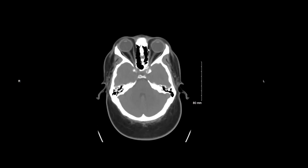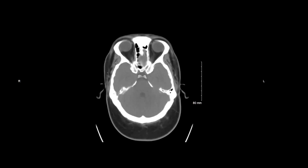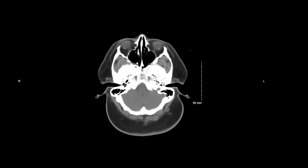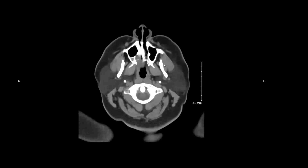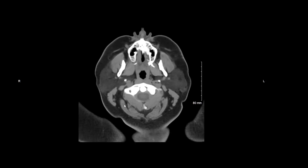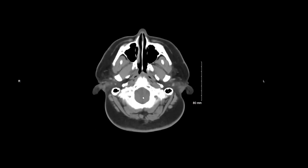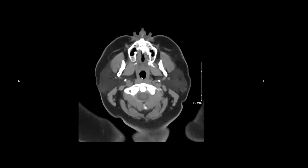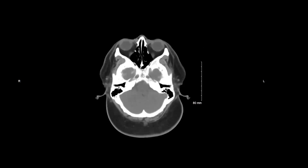I'm then going to look at the orbits, making sure that the lenses are in the appropriate position, that the ocular nerves are symmetric, that the muscles are uniform, and that there's no stranding. I'm then going to go more inferiorly and look at the muscles of mastication, the paraspinal muscles, the spinal canal and the spine. I'm going to assess the parotid glands for any nodules or masses, and look at the nasopharynx for symmetry or any other abnormality.